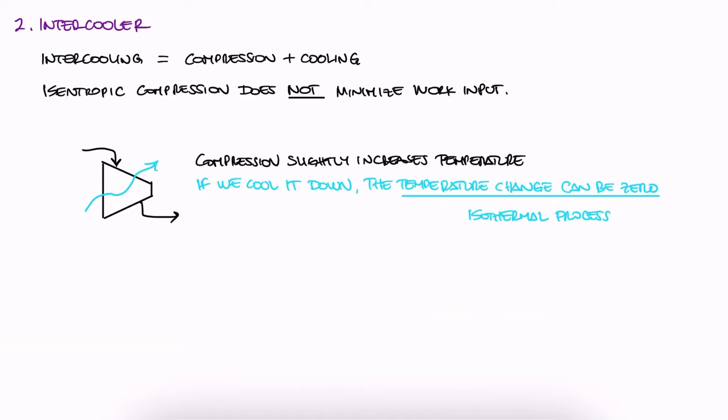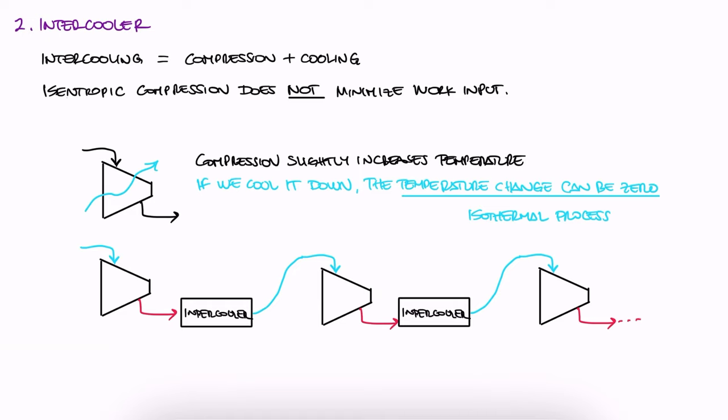In reality, what we actually do is compress, remove heat, compress, remove heat, etc. The more intercoolers you use, the higher the efficiency, but at some point, the increase in efficiency is not worth the extra complexity of the system. So, a typical arrangement includes two of these intercoolers, which will improve overall efficiency enough.